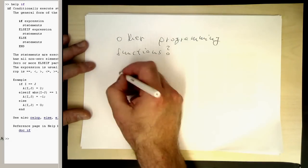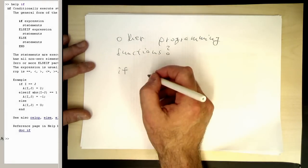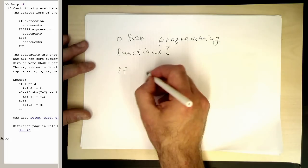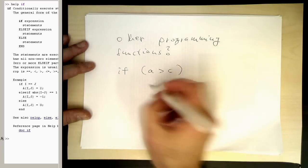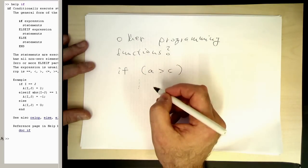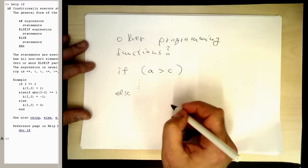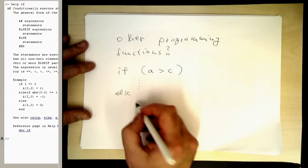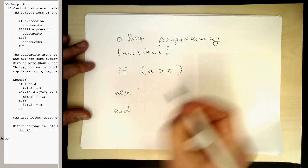What we obviously need is, for example, the if statement, and this is obviously like, for example, if a greater than c or something like this, then something can happen here. And then we could have an else statement, and then the rest is happening here, and then we have the end statement here.